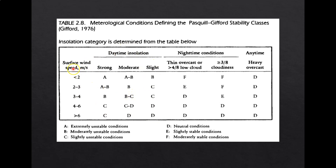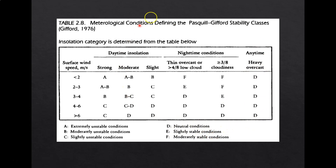Whether wind speed is less than two or more than six meters per second, those are the stability classes for daytime. During nighttime, depending on whether cloud cover is low or higher cloudiness, you only have stability classes D, E, and F. There is also another section called anytime with heavy overcast, so no matter what your wind speed is, all stability classes in this section belong to the neutral condition. This is the complete stability classes table.